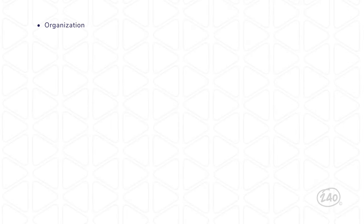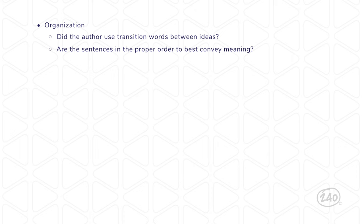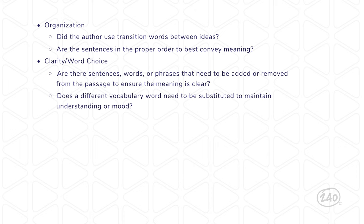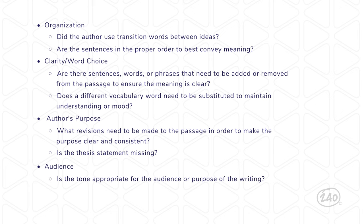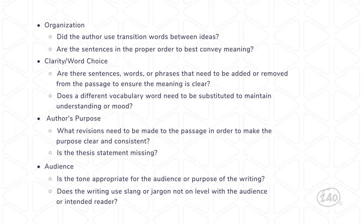When determining the best way to revise a piece of writing, we've got some guiding questions. If the question is asking about organization, check if the writer used transition words and consider whether the sentences are in the best order. To revise clarity or word choice, look for what needs to be added or removed, or a word may need to be substituted to convey the desired meaning or mood. When evaluating author's purpose, think of ways to make it clear and consistent — often a thesis statement is the key. When asked about audience, consider the writer's tone and the level of words used, or the presence of any slang or specific jargon.